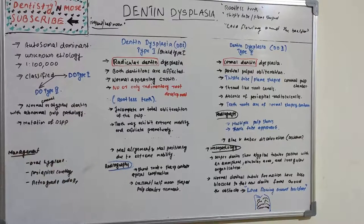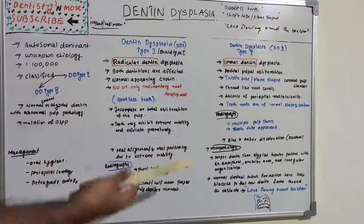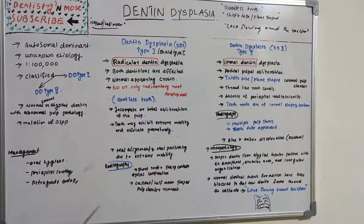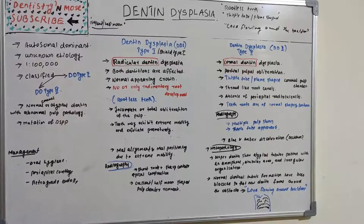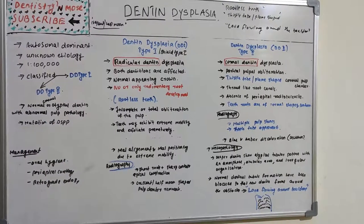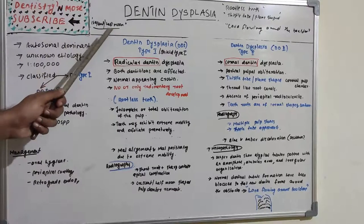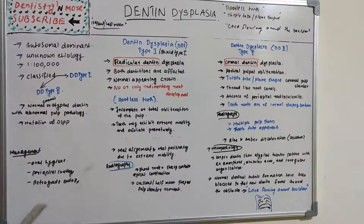Regarding the pulp in Type 1, there will be incomplete pulp or total obliteration. Teeth exhibit extreme mobility due to absent or rudimentary roots and exfoliate prematurely — before the expected time. This leads to malalignment and malpositioning. Radiographically, there will be short roots with sharp conical apical constriction, and a crescent or half-moon shaped pulp chamber is characteristically present.